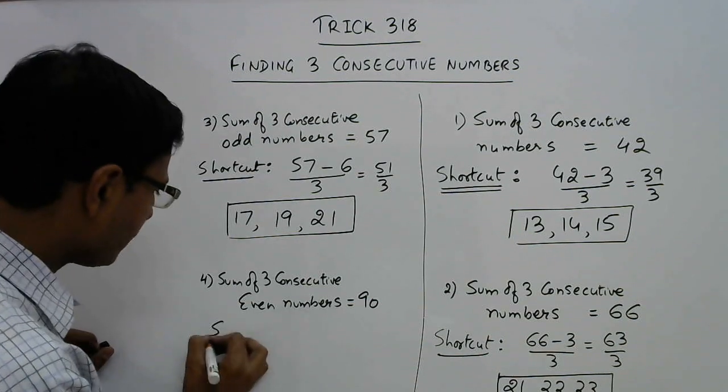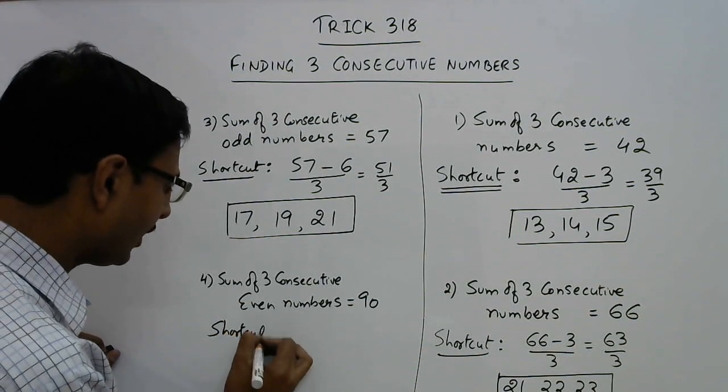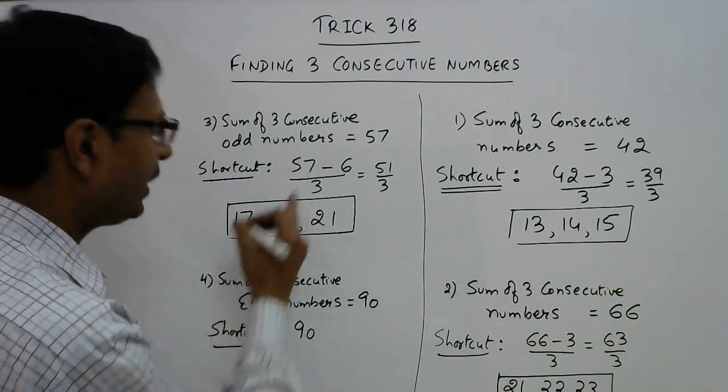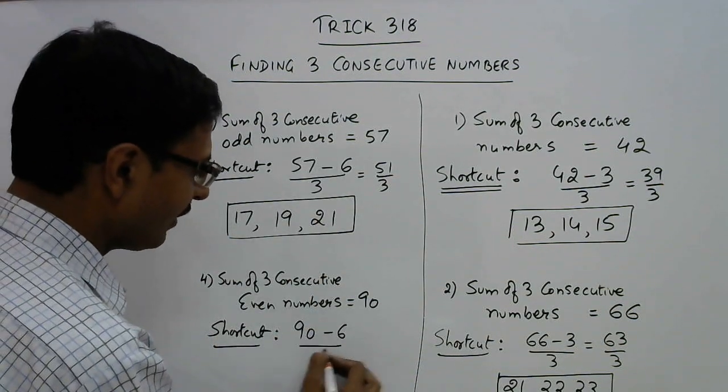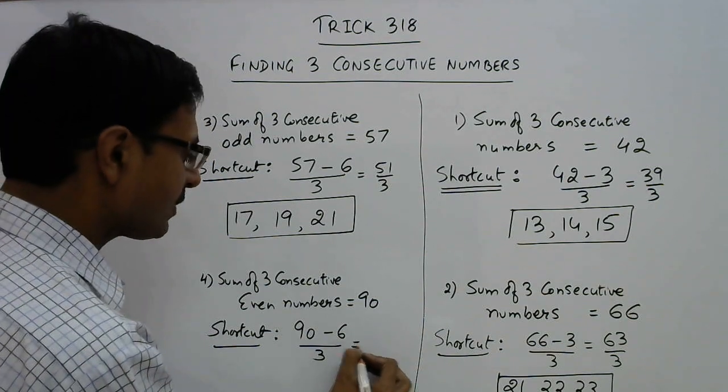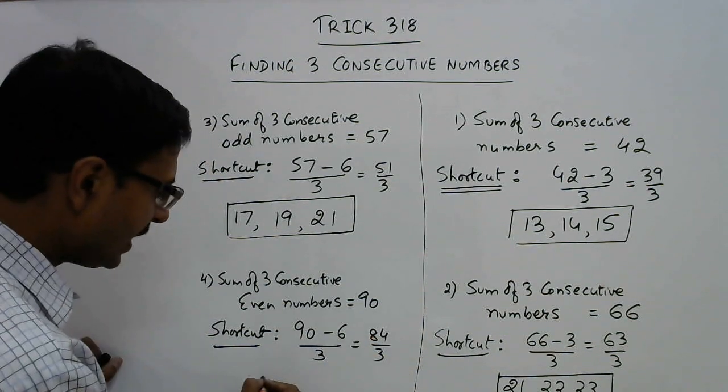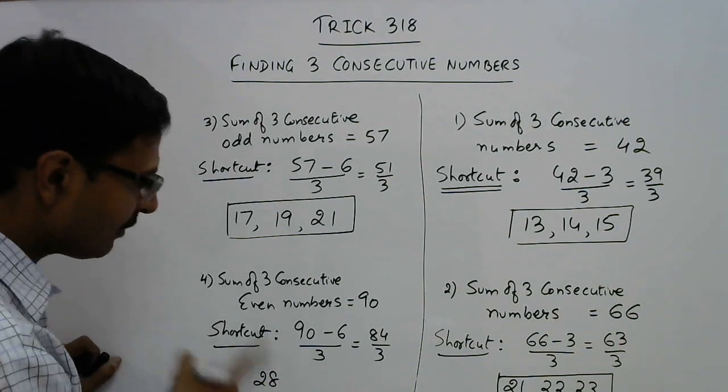Apply this here again. The same shortcut will work for even numbers also. The sum is 90, so subtract 6 and divide by 3. If you subtract 6 you get 84 by 3, this is 28, and the consecutive even numbers are 30 and 32.